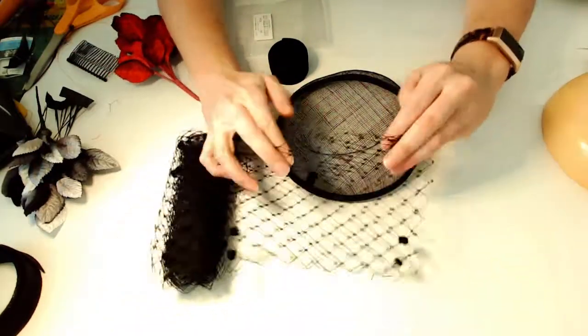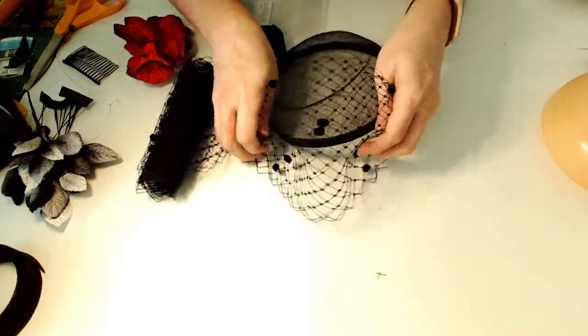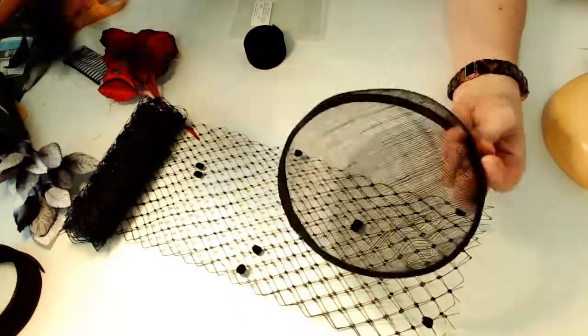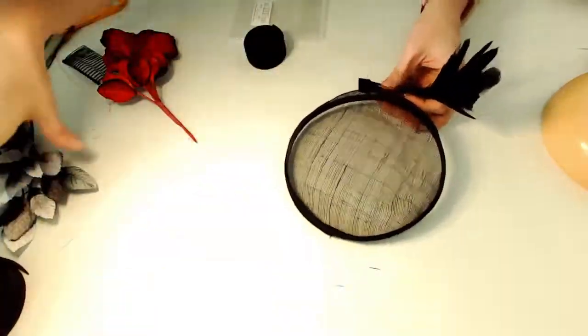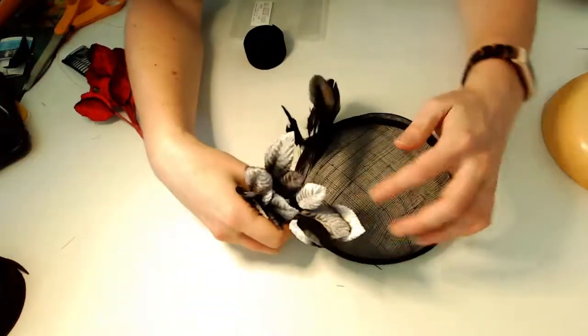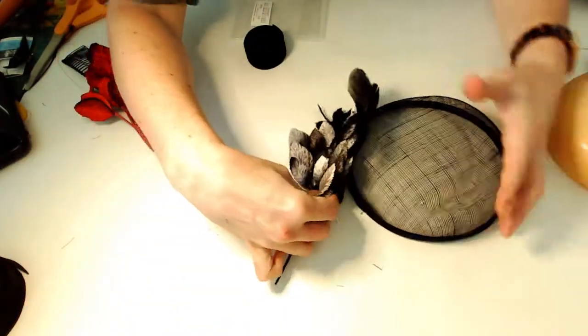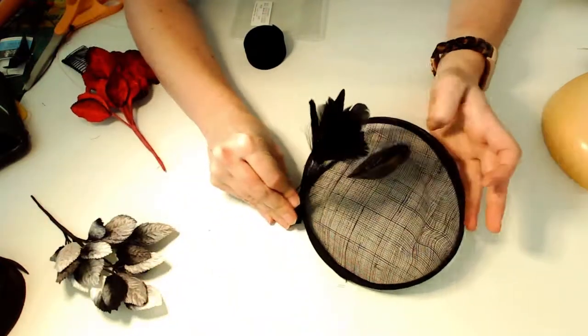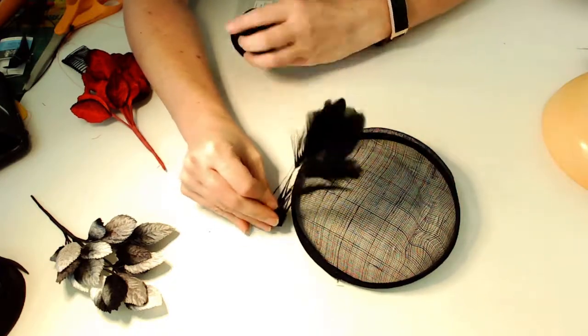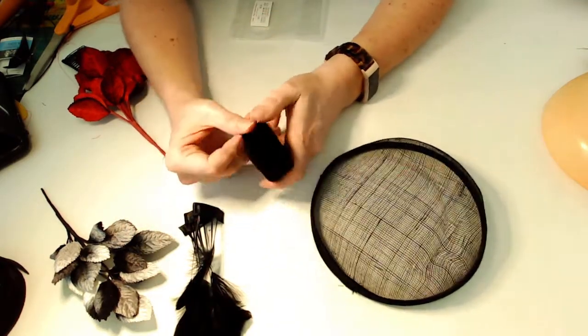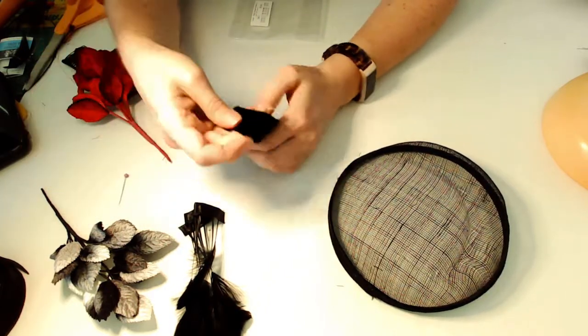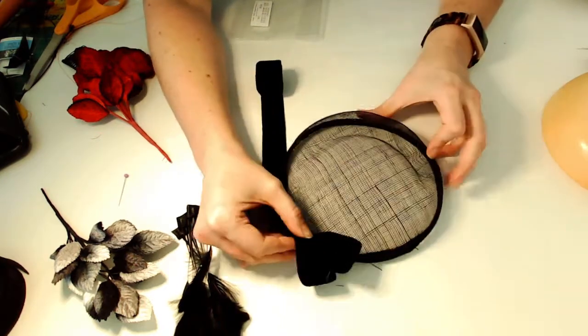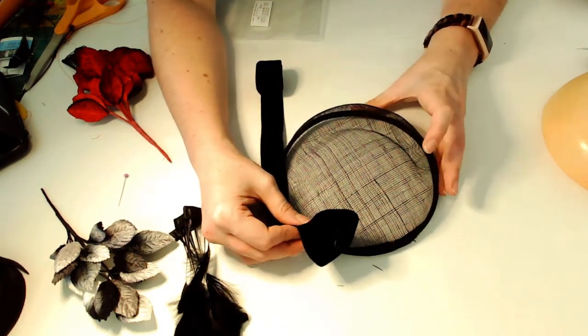And then the next thing to think about is the decoration. So you could use some veiling and add that to part of the hat, to the front. You could use any combination of like feathers or flowers to really add something. And you just want to play with it. You could go simple, just use a little flower, little feathers. You can make some decorative ribbon shapes as well. So you just want to play with the material and see what makes sense for the little hat that you will have. And how do you want it to look when you wear it?